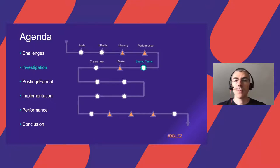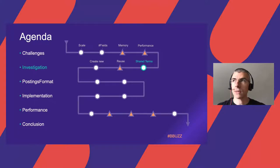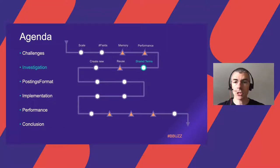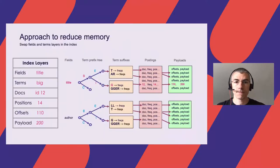Now let's come back to the journey map to get more details. We had very challenging constraints — that's the first line of the map. Then we started to investigate solutions. We needed a solution to reduce memory usage and increase query throughput. Our main challenge was to reduce memory usage — not a small issue, a serious out-of-memory crash.